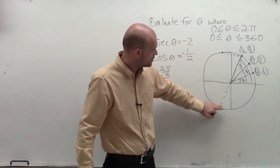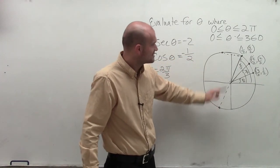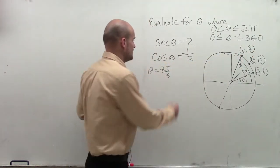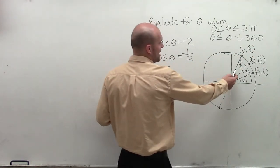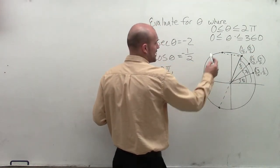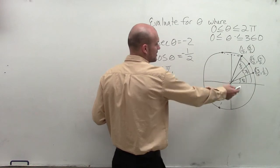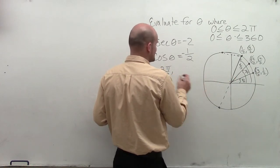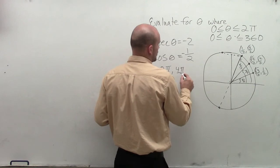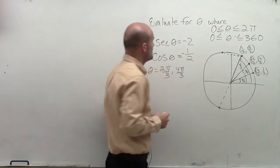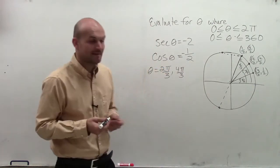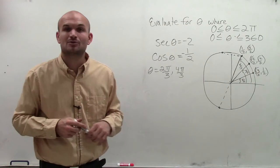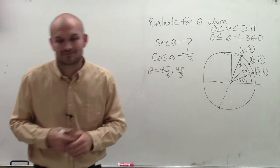If I reflect that point over the x-axis, now both my x and y values will be negative. Counting through — 1π, 2π, 3π — my next angle would be 4π over 3. So there you go: those are your two angles when cosine of theta equals negative 1 half: 2π/3 and 4π/3. Thanks.